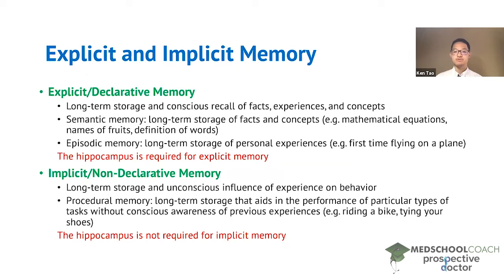Examples of procedural memory include riding a bike or tying your shoes. When you're tying your shoes you don't have to consciously think about it — it just happens automatically. But if you hadn't learned to tie your shoes before, you wouldn't be able to do it unconsciously.